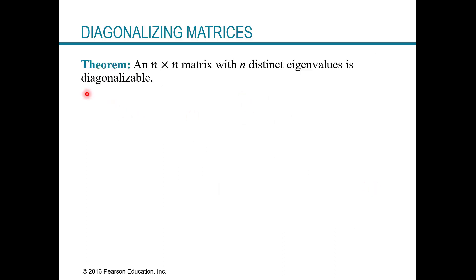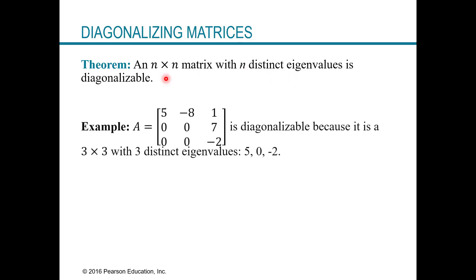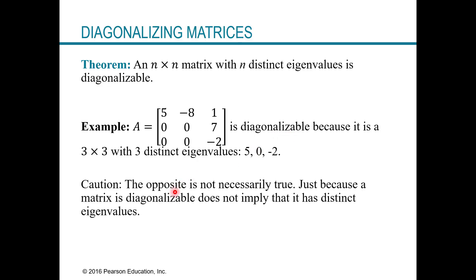One final theorem: an N by N matrix with N distinct eigenvalues is diagonalizable. For example, a matrix in triangular form with main diagonal entries 5, 0, and negative 2 has three distinct eigenvalues, so it's diagonalizable. A quick caution: the opposite is not necessarily true. Having a diagonalizable matrix does not mean you have distinct eigenvalues — the implication only goes one direction. If you have N distinct eigenvalues, then you know for sure it's diagonalizable. That's it for this one. Thanks for watching.